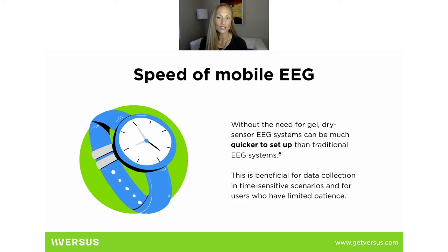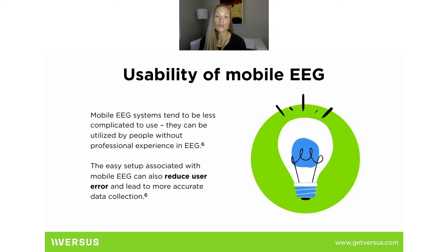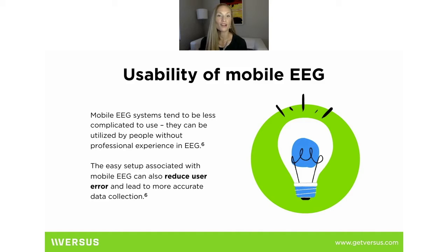Mobile EEG systems tend to be less complicated — you don't have to be a trained neuropsychologist or EEG technician to use a Versus headset. With every step of our design we've had that end user in mind, envisioning somebody being able to go to Best Buy, pick up a headset, put it on their head, know they're getting good signal quality, placing their sensors in the proper place, and having the app walk them through the process.